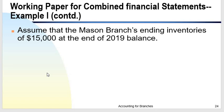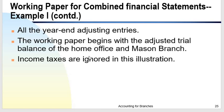Assume that the ending inventory balance of the branch is $15,000. Note that shipments were $60,000 and the ending balance is $15,000. Adjusting entries in the home office books are complete. The working paper begins with the adjusted trial balance of the home office and Mason Branch. Income taxes are ignored in this illustration.